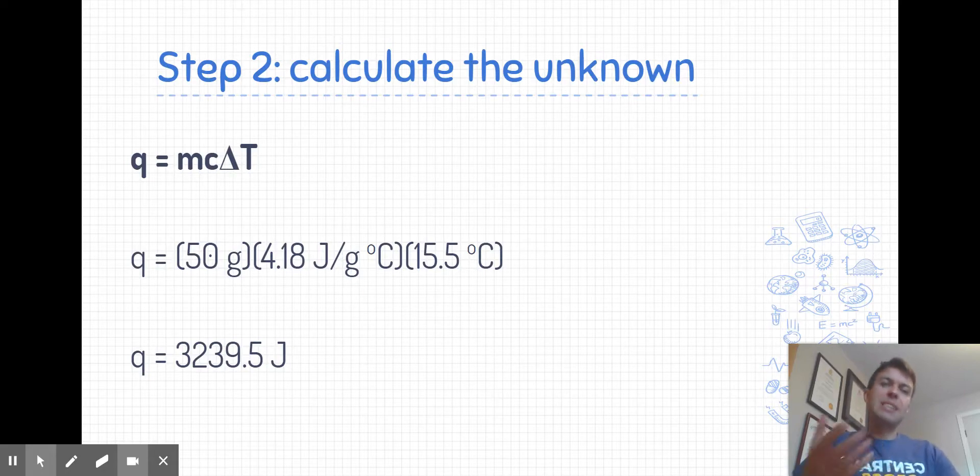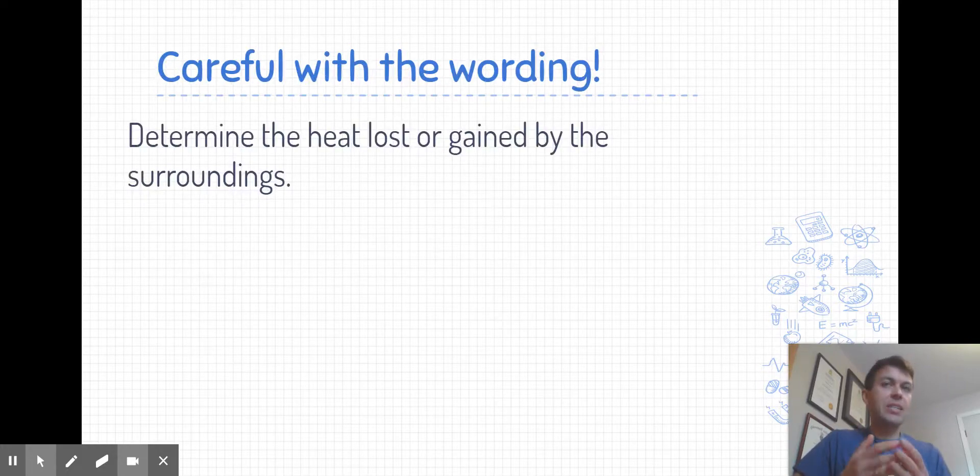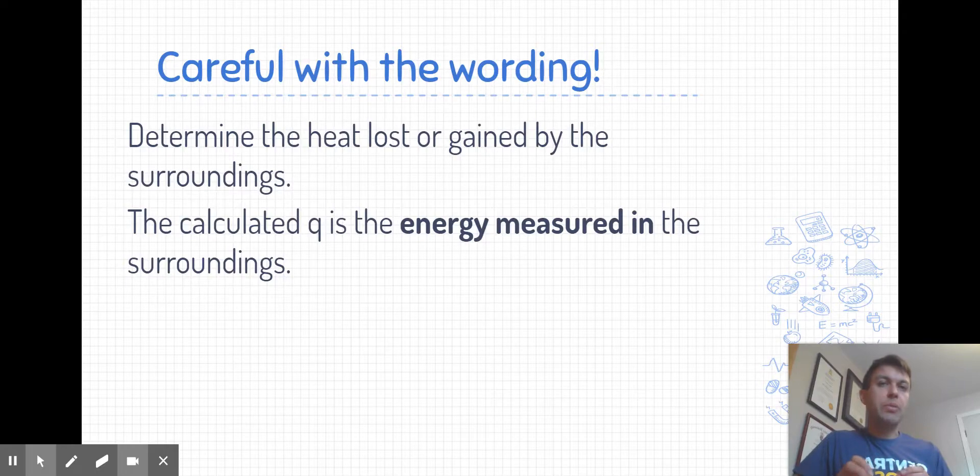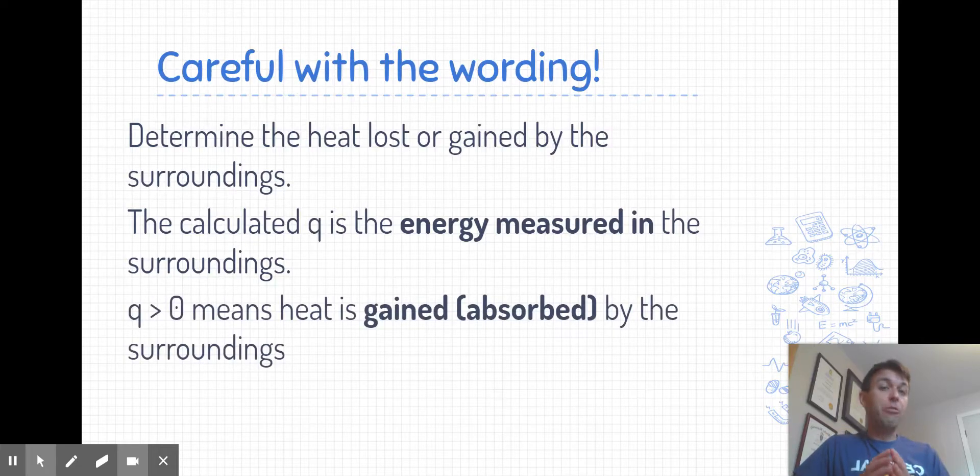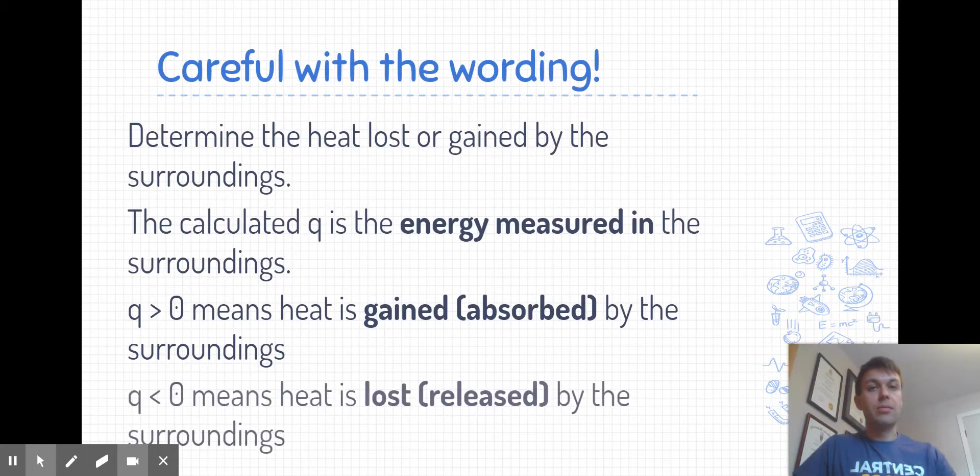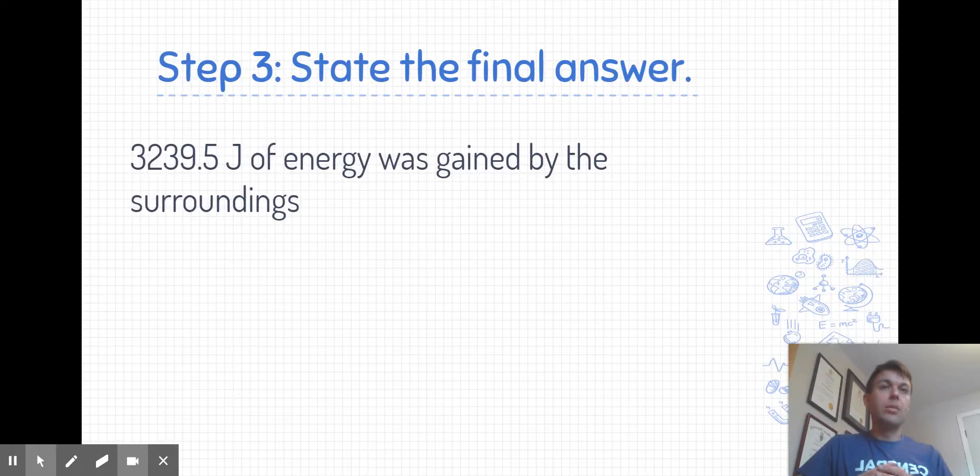Now, in problems, we always want to state our final answer. And so you need to be careful with the wording here. The question asks us to determine the heat lost or gained by the surroundings. When we use the Q equals MC delta T equation, that calculated Q value is the energy that was measured in the surroundings. If we have a Q that's greater than zero, that means that heat is gained or absorbed by the surroundings. If we have a Q value that's less than zero, that means heat is lost or was released by the surroundings. So the way we would state this, 3,239.5 joules of energy was gained by the surrounding, or you could say was absorbed by the surroundings.